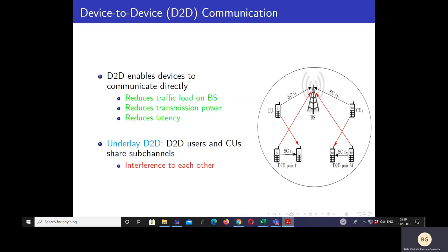In device-to-device, D2D communication, devices communicate directly with each other. This is unlike conventional cellular communication, where cellular users communicate through uplink and downlink via the base station. D2D has many advantages: it offloads traffic from the base station, it reduces transmission power because there is no uplink and downlink, and it also reduces transmission latency.